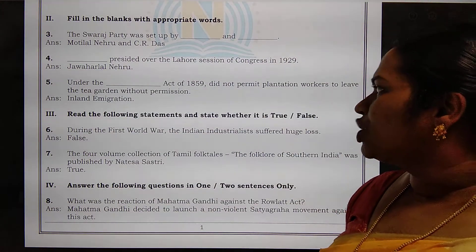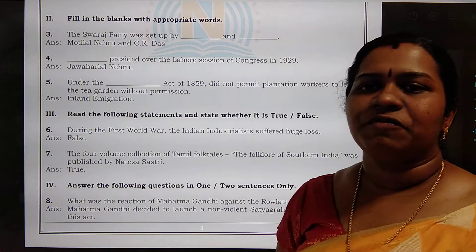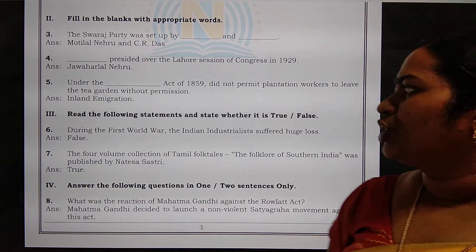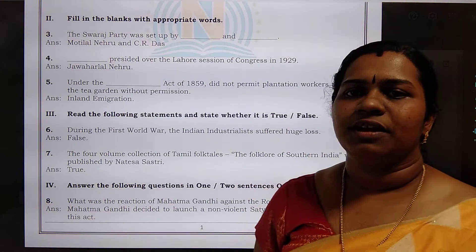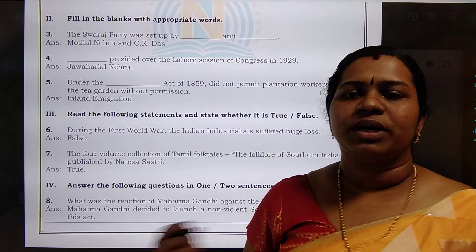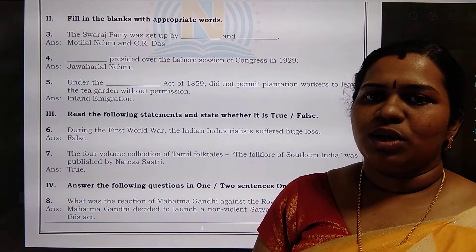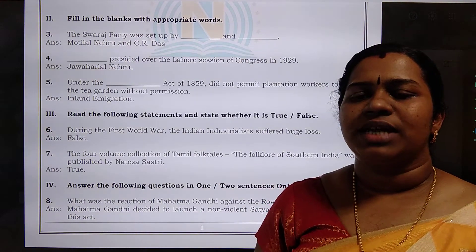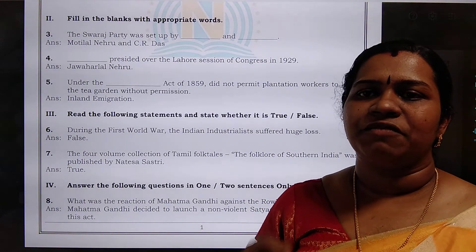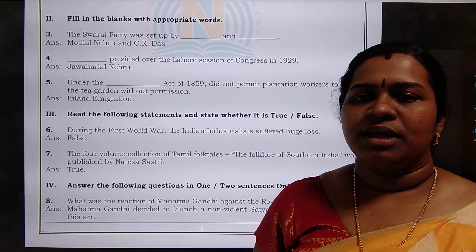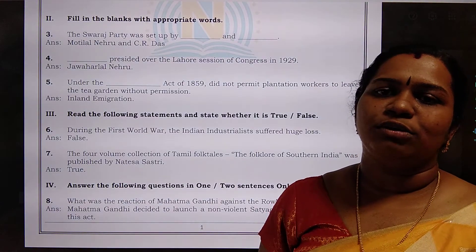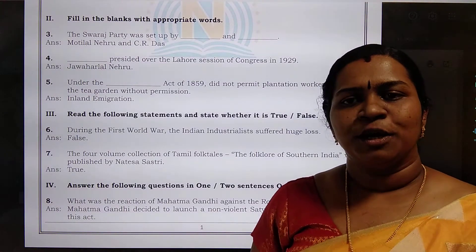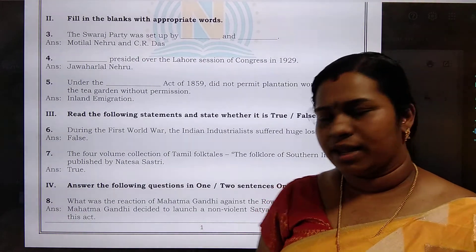Under the Inland Immigration Act of 1859, plantation workers of tea gardens were not permitted to come out of the main area. According to this act, the plantation workers were not allowed to come out of the confined plantation area.